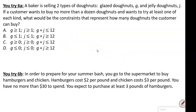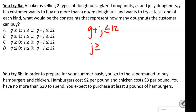A baker is selling glazed donuts G and jelly donuts J. A customer wants to buy no more than a dozen donuts, so G plus J is less than or equal to 12. The customer wants to try at least one of each kind, so J is greater than or equal to 1 and G is greater than or equal to 1. Those are our three constraints.